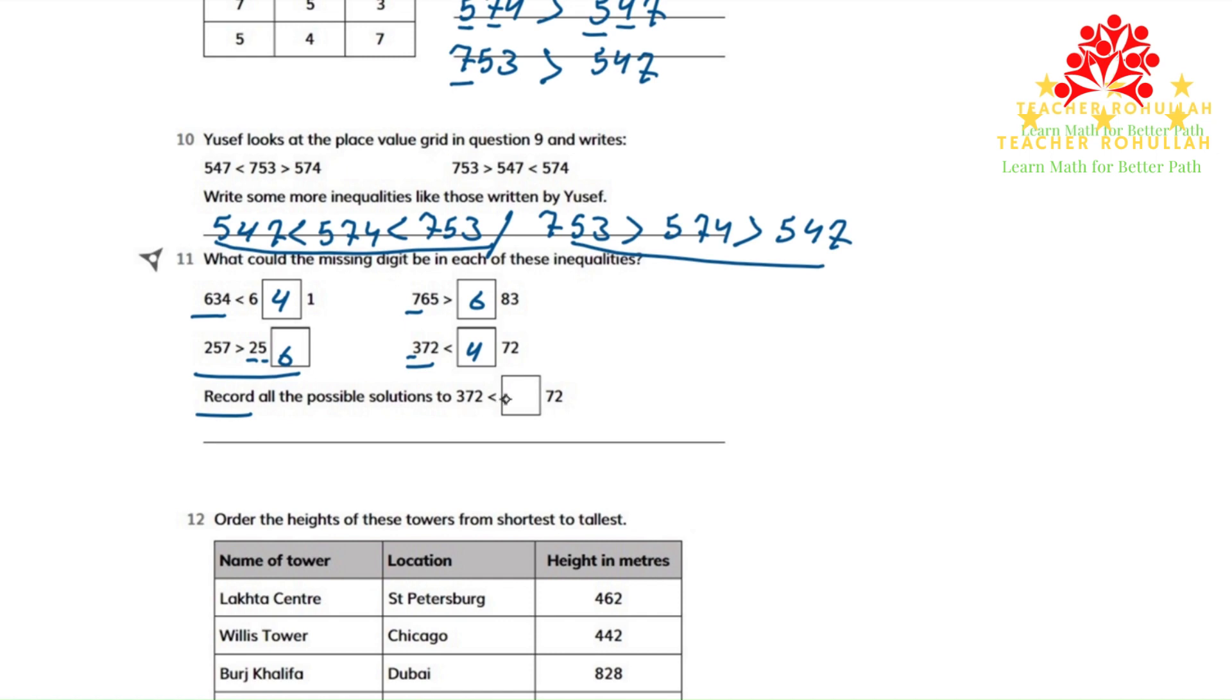372 is less than 472, and it is less than 572. It is also less than 672. It can be less than 772, it can be less than 872, it can be less than 972. These are all the possible answers that can make this inequality correct.